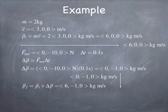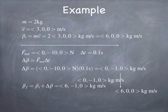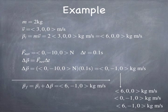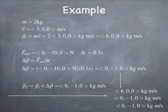The final momentum is the sum of the initial momentum — 6 kilogram meters per second in the positive x direction — and the change in momentum — negative 1 kilogram meters per second in the y direction. Vectors add by components: x, y, and z components each add, giving a final momentum of 6 in the x direction, minus 1 in the y direction, and 0 in the z direction, all in units of kilogram meters per second.